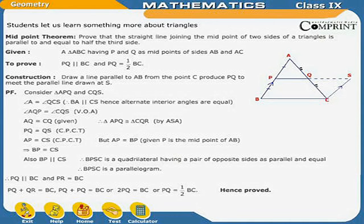PQ plus QS equals BC. Since PQ equals QS, we get 2·PQ equals BC, which gives PQ equals half of BC. Hence proved.